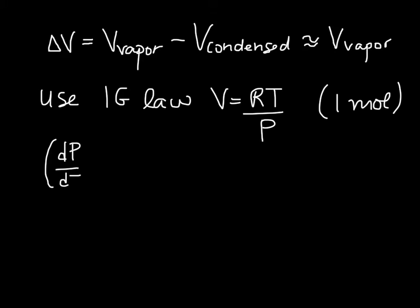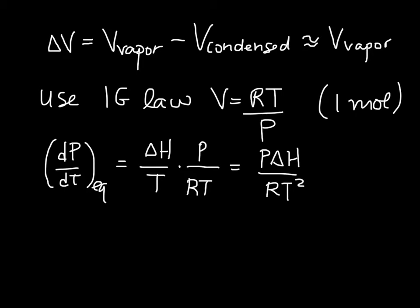So now we have dP/dT, where the two phases are in equilibrium, is delta H divided by T, and then also divided by delta V, which we are now plugging in V of the vapor, so that looks like this. So the right hand side is P delta H divided by RT squared. And we can do a little bit of rearranging, and end up with an expression that says dP divided by P is equal to delta H over RT squared dT.